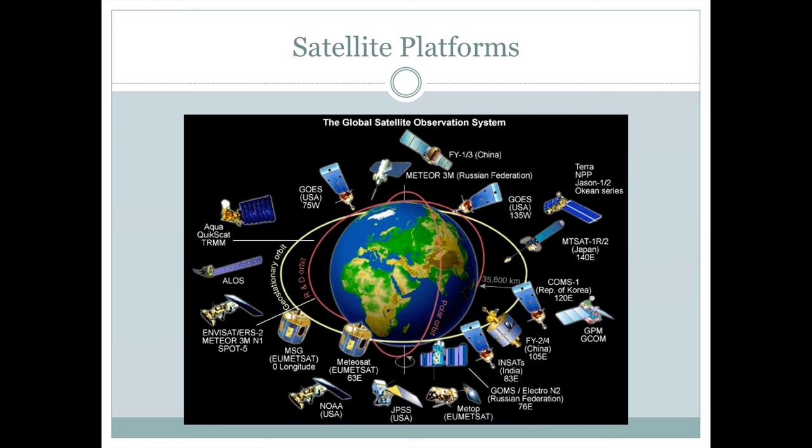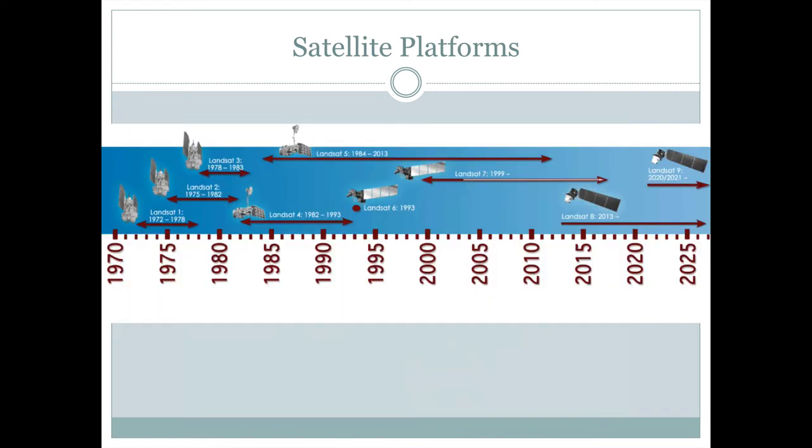The one we'll really focus on in this class is the Landsat platform. Landsat has been around since Landsat 1 in the early 1970s. But the data that you'll be using for the labs in this class is from Landsat 8, which was launched in 2013. So much of the information you'll be seeing is fairly recent images of the ground that were collected with Landsat 8. And this is what you'll be using in order to display and interpret remote sensing imagery in this class.